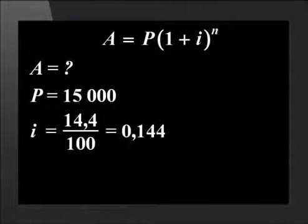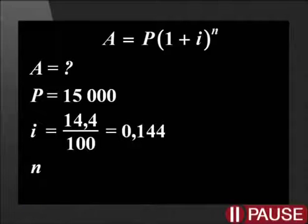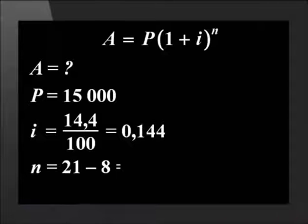We haven't been given a value for n, but we know that the money was invested from Michelle's 8th birthday to her 21st birthday. Why don't you try working out n, and then solve for A. From Michelle's 8th birthday to her 21st is 13 years, so n is 13.